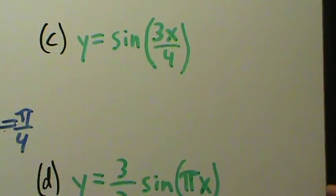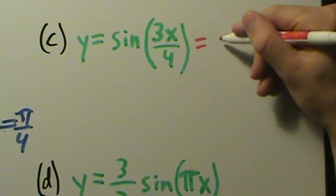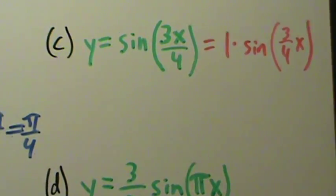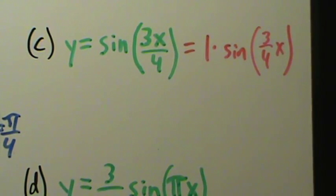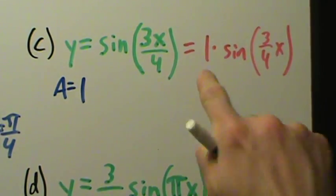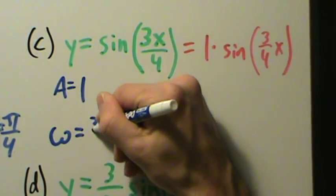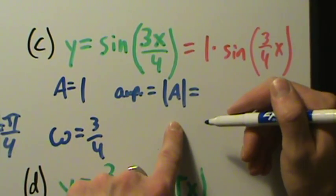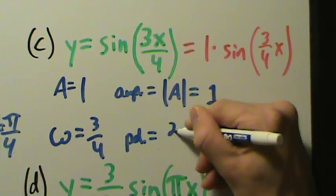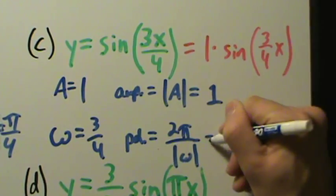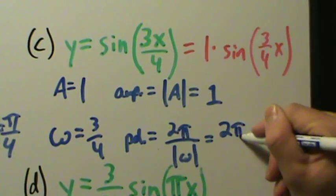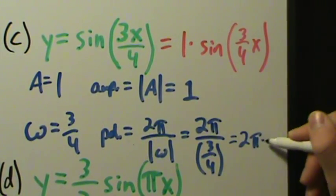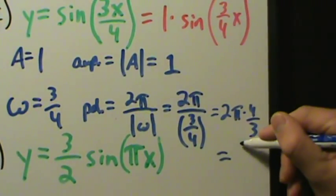Part C: y equals sine of 3x over 4. We can rewrite this as 1 times the sine of three-fourths times x. So A equals 1, and omega equals three-fourths. The amplitude is the absolute value of A, but A is already positive, so it's just 1. The period is 2π over the absolute value of omega. Since omega is already positive, this is just 2π divided by three-fourths. Dividing by three-fourths means multiplying by the reciprocal four-thirds, so the period is 2π times four-thirds, which equals 8π/3.